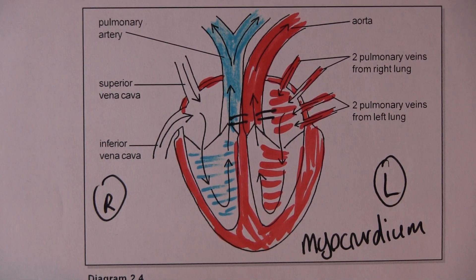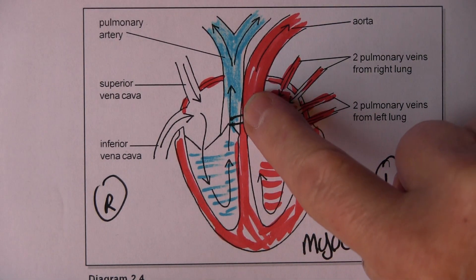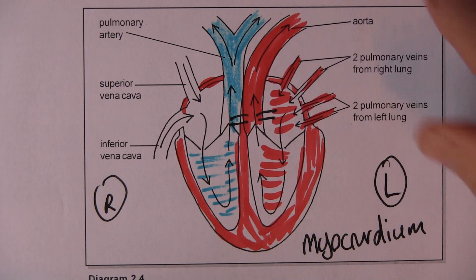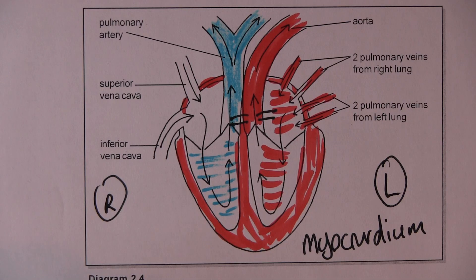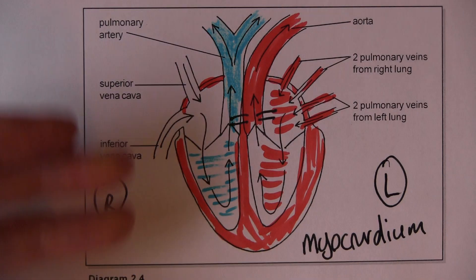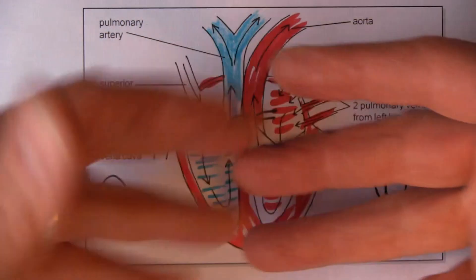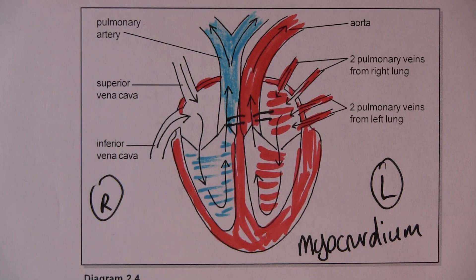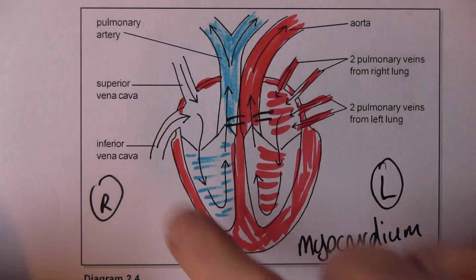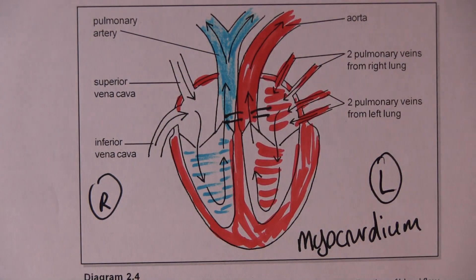To finish off the story on this diagram: blood from the aorta goes around all the arteries of the body. The aorta breaks into progressively smaller arteries, then into microscopic arteries called arterioles. Blood goes through the capillaries, draining into venules, then into progressively larger veins until we get to the superior and inferior vena cava.